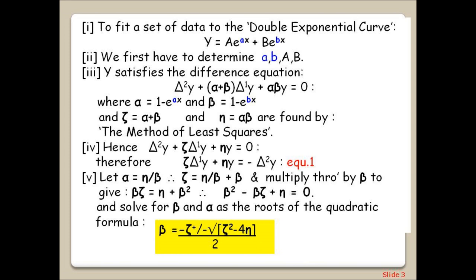4. Hence, starting with the quadratic delta 2Y plus zeta delta 1Y plus eta Y equals 0, we can rearrange to give equation 1. 5. From the equations for zeta and eta in 3, we can substitute and rearrange as shown to derive a quadratic involving beta squared, which we can then feed into the quadratic roots formula highlighted yellow, and from which we obtain beta and alpha as the roots.